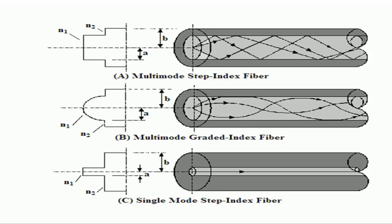Based on refractive indices, fibers are classified as step index fiber and graded index fiber. In the step index fiber, there is a uniform distribution of refractive index in the core, and the cladding has a lower uniform refractive index — this is the multi-mode step index profile. In the graded index fiber, the refractive index varies gradually as a function of radial distance from the center, known as multi-mode graded index fiber. Single-mode step index fiber also has uniform refractive index in the core with lower uniform distribution in the cladding.